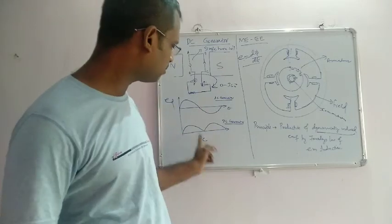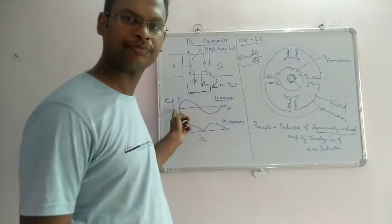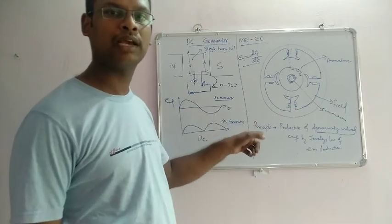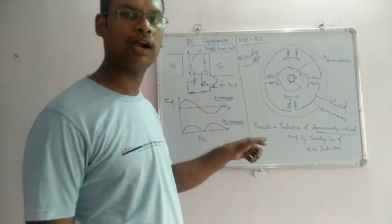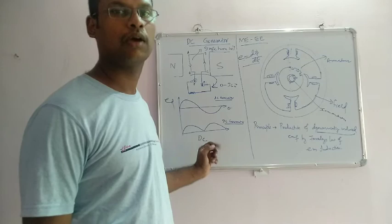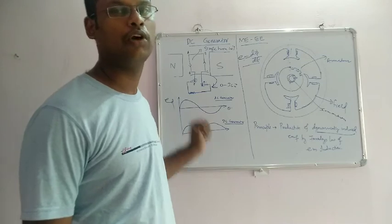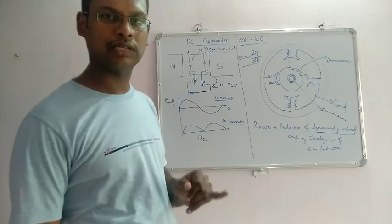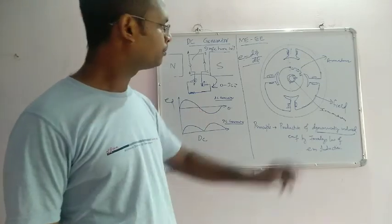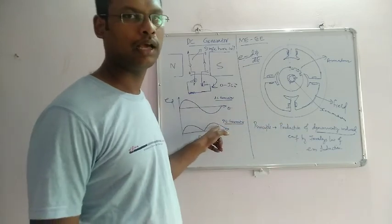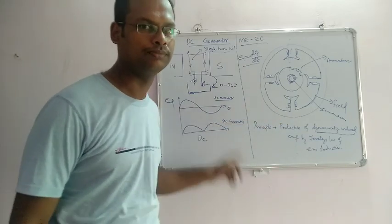In summary, the DC generator works by the production of dynamically induced EMF. The working principle is Faraday's law of electromagnetic induction. The DC generator construction involves a stationary field system and a rotating armature.